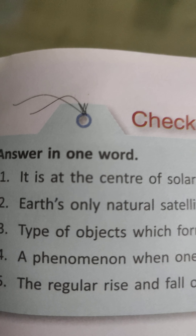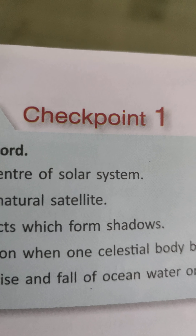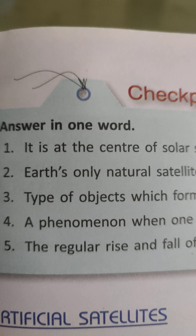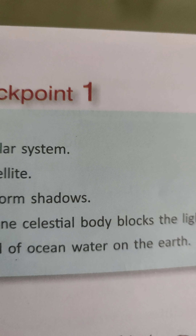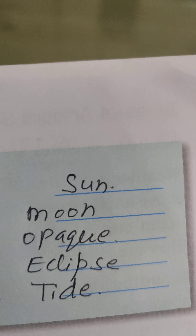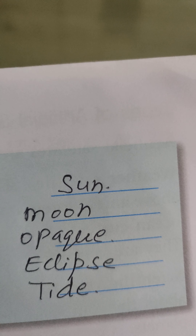The next question is about the type of object which forms shadows — a phenomenon when one celestial body blocks the light of another.